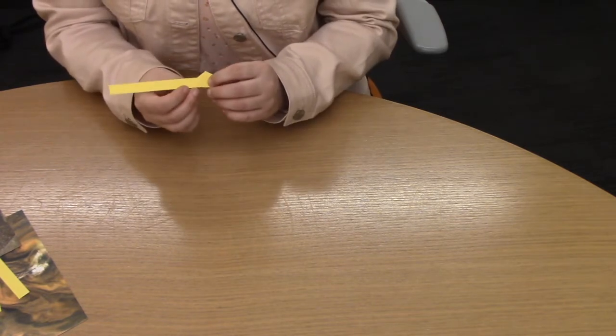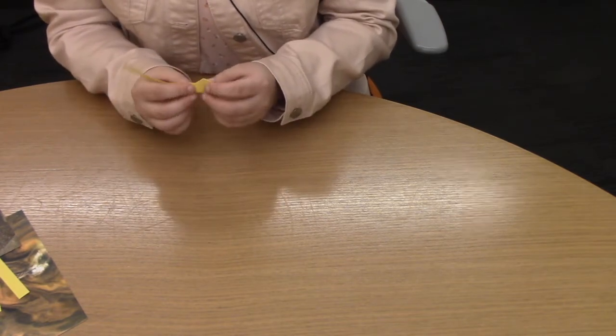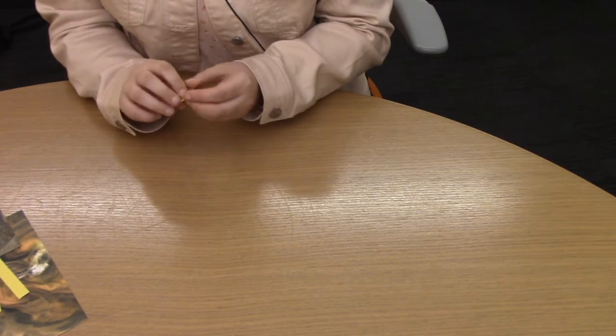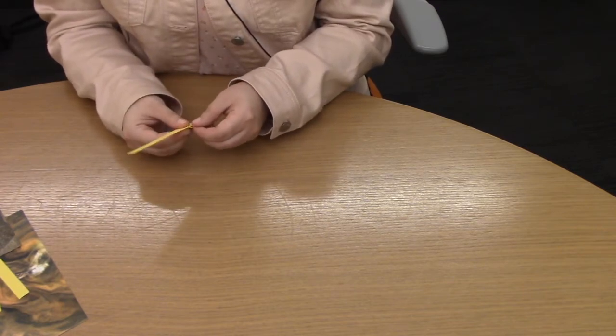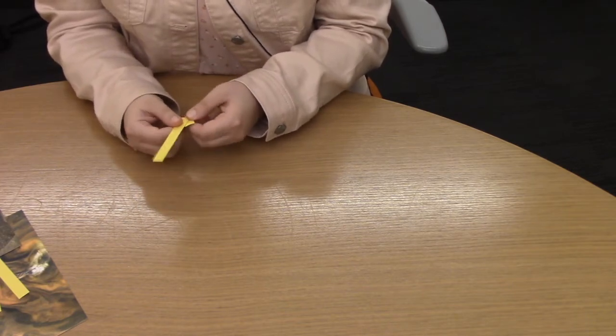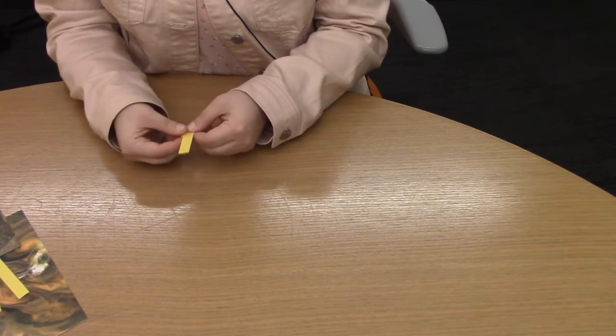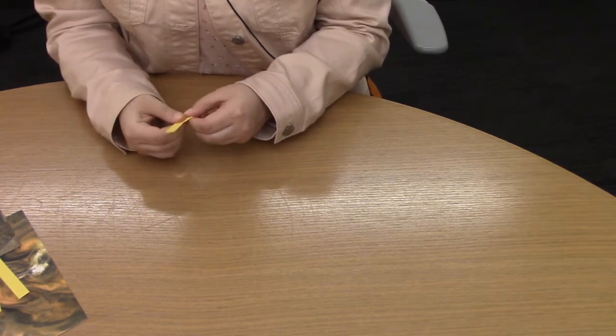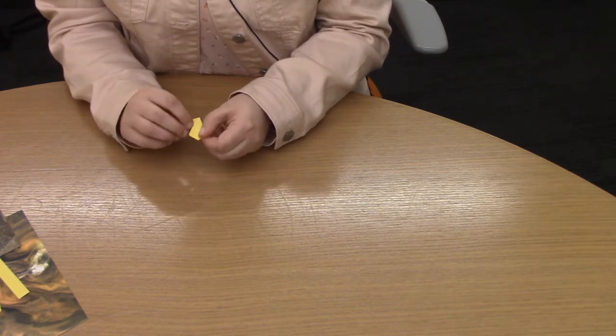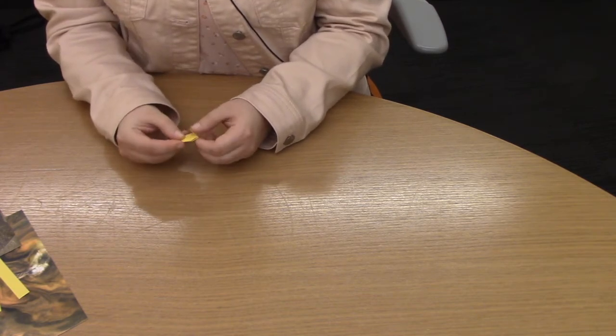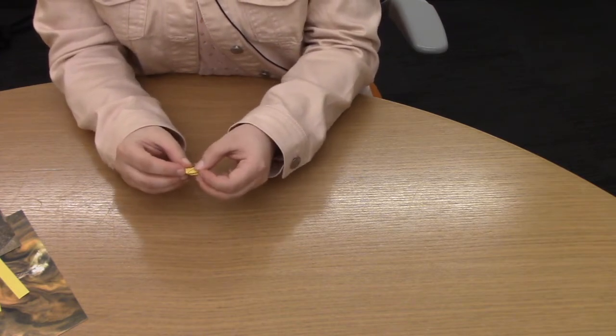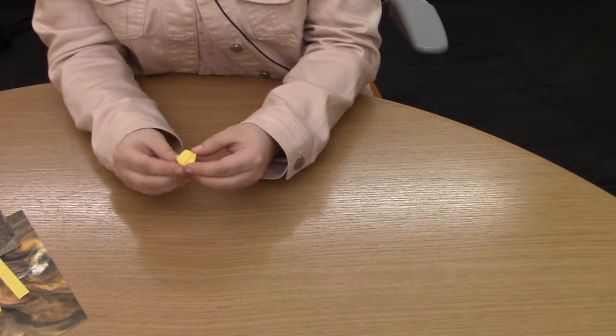Then you're going to take this long tail end and just keep folding it around the pentagon shape. As you fold, it should line up with each edge of the pentagon. And then at the end, you'll have a little bit left over, so you can just tuck that end into another folded crease on the star.